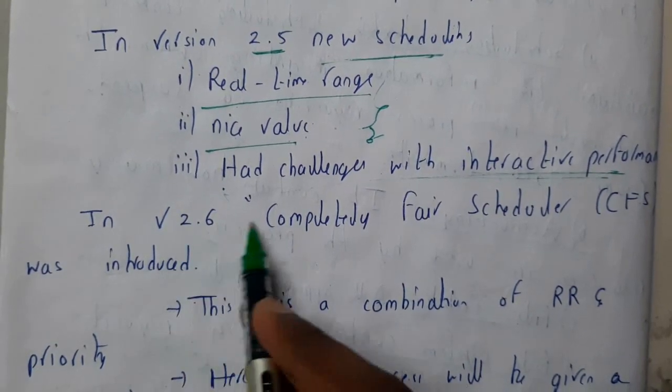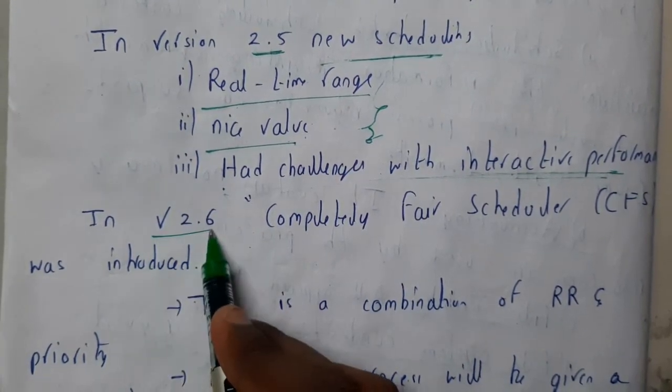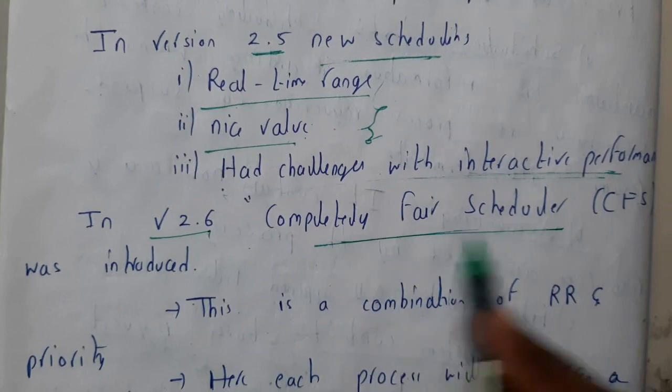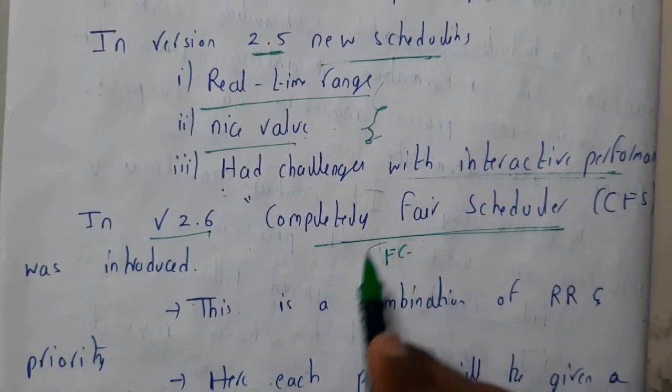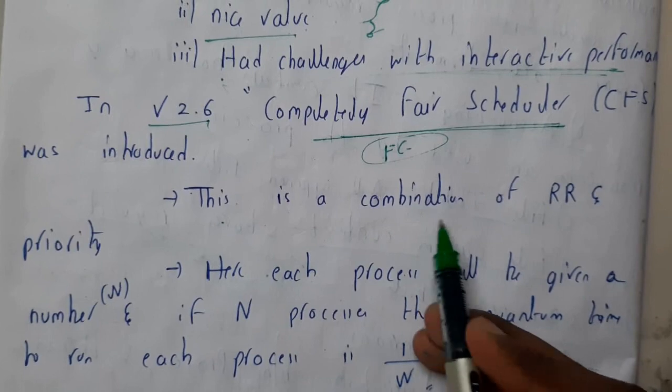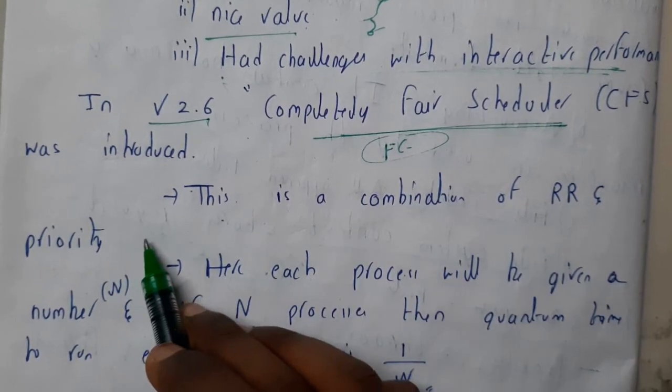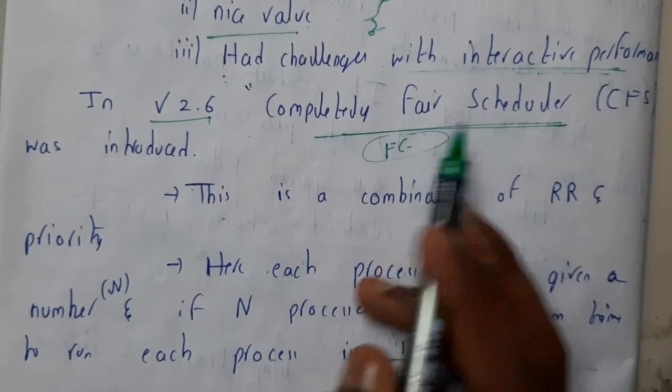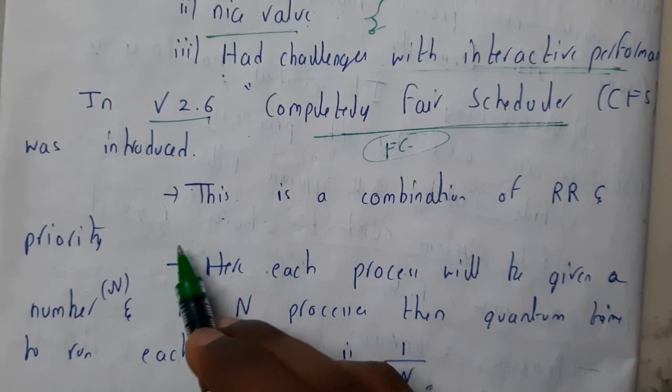That is the reason why in version 2.6, completely fair scheduler, which is almost similar to FCFS, was introduced. This is a combination of round robin and priority. This completely fair scheduler is presently used even in Linux systems, even nowadays.